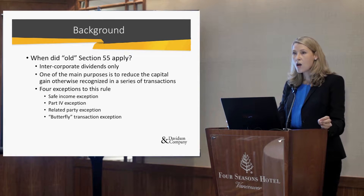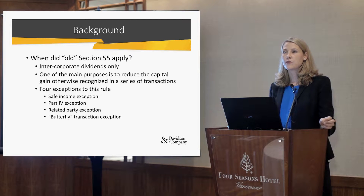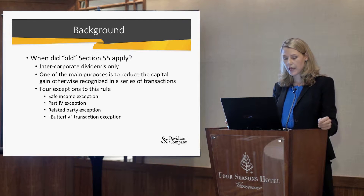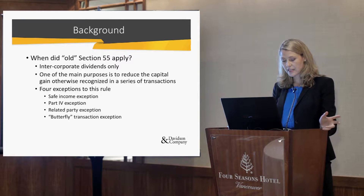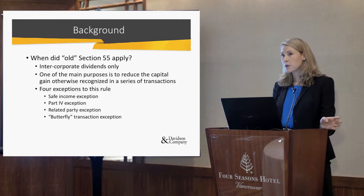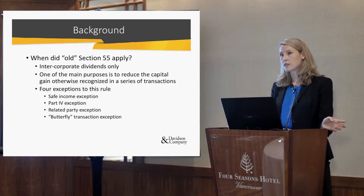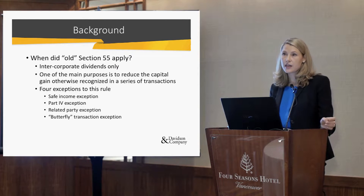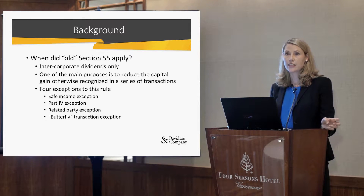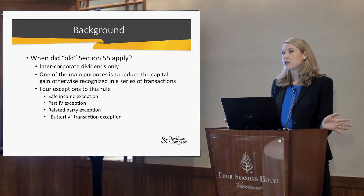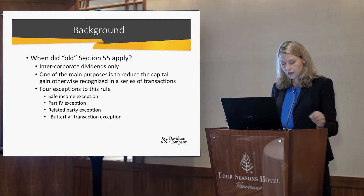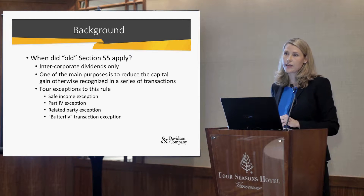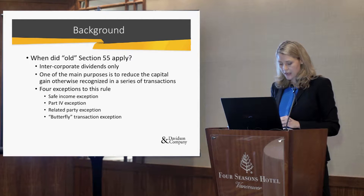So how can we get out of the 55(2) rules? The first exemption is the safe income exemption — simply put, it's tax retained earnings. The second one is to pay Part IV tax on the dividend, which means the dividend would not be a tax-free dividend and the rules would not apply. The third one is to use the related party exemption.